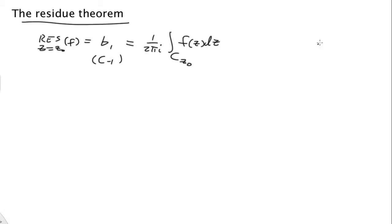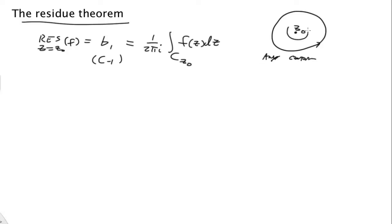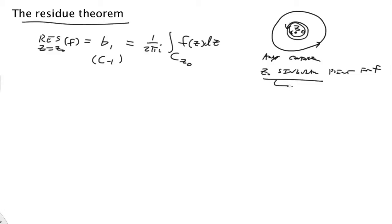What do we mean by a contour enclosing z-naught? It's a simple closed contour around the point z-naught. It has to be any contour that can get smaller and smaller around there and still retain the same value. Usually we're studying this when z-naught is a singular point for f(z), and we want this to be an isolated point.